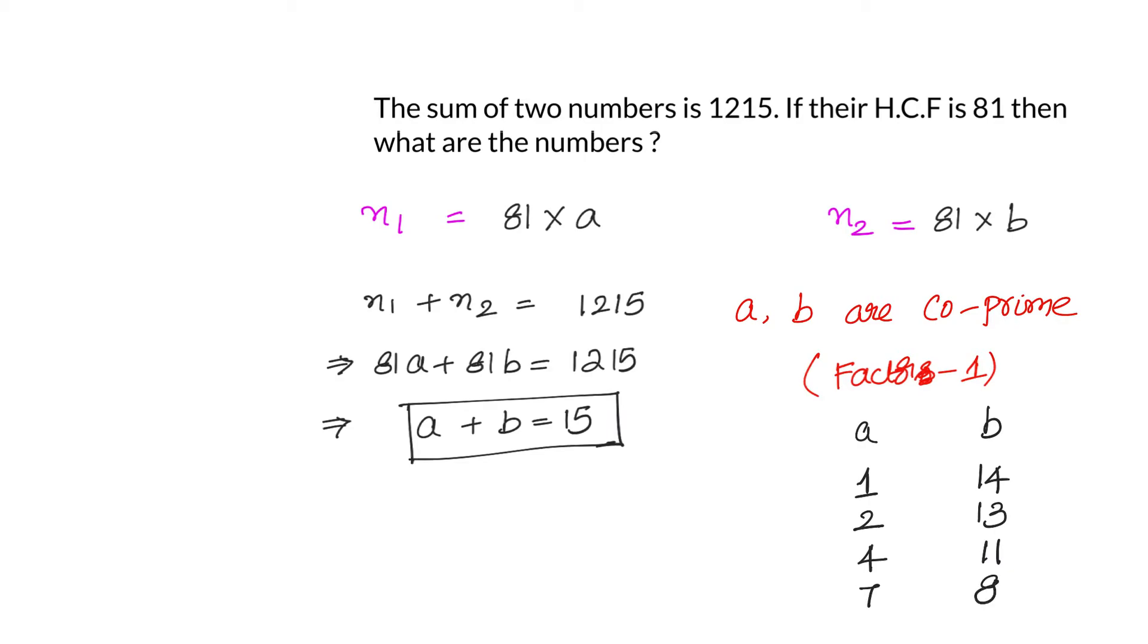So these are the different combinations of a and b which will satisfy that a plus b is 15, and they will also satisfy the other condition that HCF is 81. Now why we are not considering 3 and 12, 5 and 10, 6 and 9? Because they will change the HCF from 81 to other value. We need to retain our HCF as 81. That means the values of a and b should be such that they sum up to 15 and also they should be co-prime.